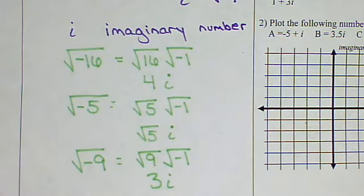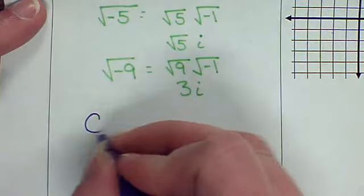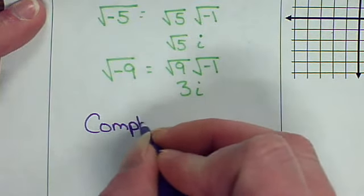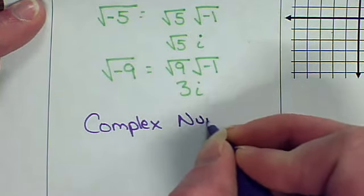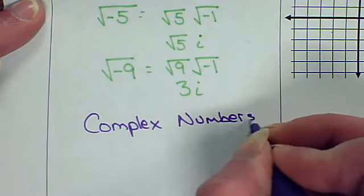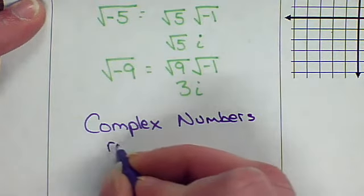Now, we not only made up imaginary numbers, but we said, well, what if we add them to some real numbers? Well, if we do that, we get what is called the complex numbers. Complex numbers are part real and part imaginary.